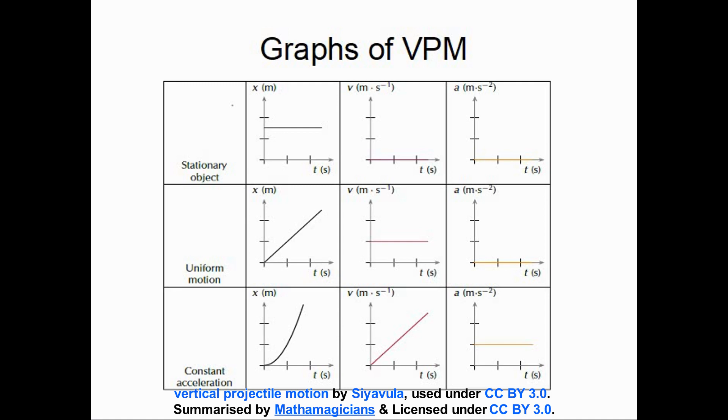Let's have a look at each of the graphs for a stationary object. The acceleration time graph will be zero. So would the velocity time graph also be zero. And the displacement would be constant, a straight line.